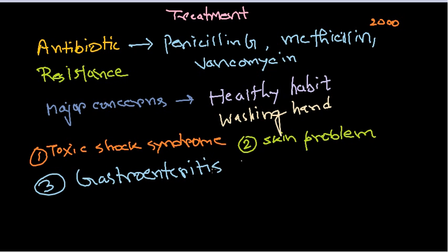These are the three major types of concerns caused by Staphylococcus. Gastroenteritis is directly related to food habits, so you need to be very careful about choosing your food and maintaining food hygiene. For toxic shock syndrome and skin problems, you need to look at other healthy habits.